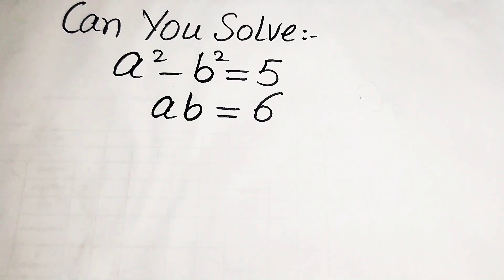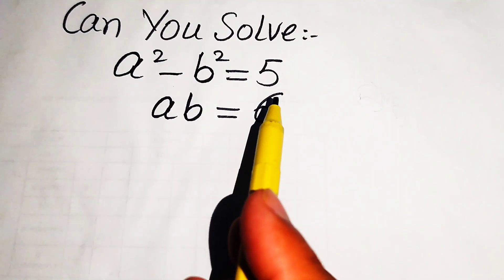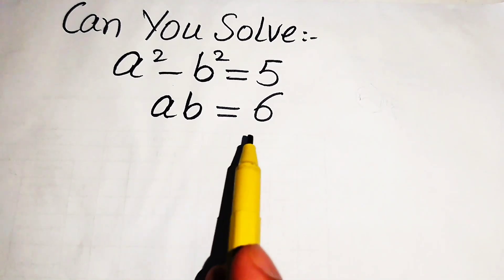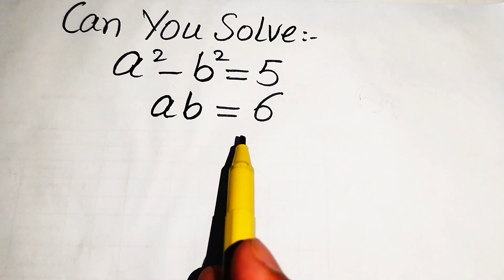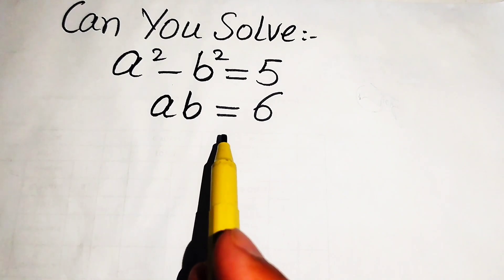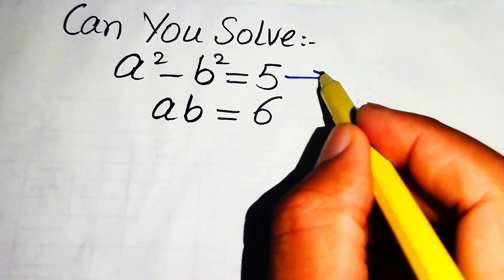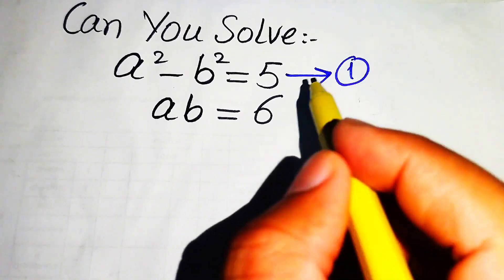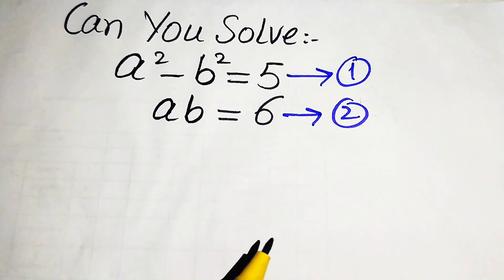Hello everyone, welcome. In this problem we have a² - b² = 5 and ab = 6. We need to solve this problem for the real values of a and b. We call the first equation number one and the second equation number two.